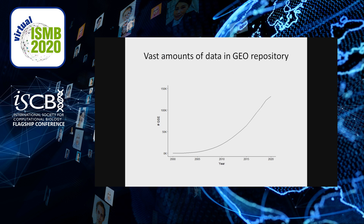We know that the Gene Expression Omnibus contains a vast and growing amount of transcriptomic data. This resource is a great opportunity for data reuse and reanalysis. However, based on our experience, before performing any reuse, a lot of time and effort is needed to curate and reprocess the datasets stored in GEO.